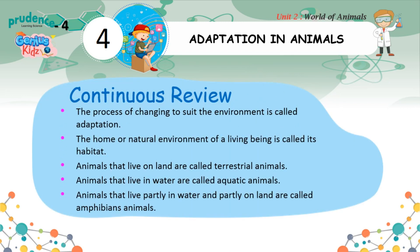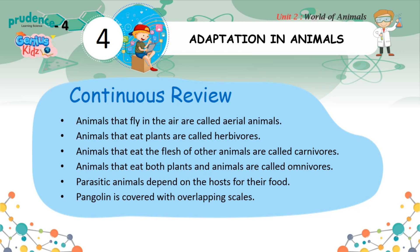Continuous Review. The process of changing to suit the environment is called adaptation. The home or natural environment of a living being is called its habitat. Animals that live on land are called terrestrial animals. Animals that live in water are called aquatic animals. Animals that live partly in water and partly on land are called amphibians. Animals that fly in the air are called aerial animals. Animals that eat plants are called herbivores. Animals that eat the flesh of other animals are called carnivores. Animals that eat both plants and animals are called omnivores. Parasitic animals depend on their hosts for food. Pangolin is covered with overlapping scales.